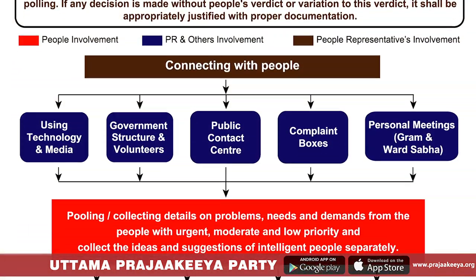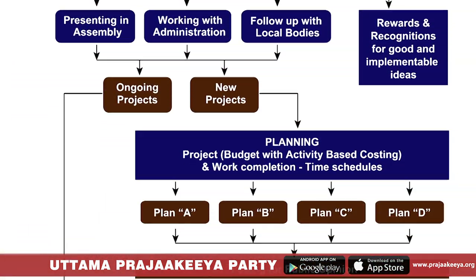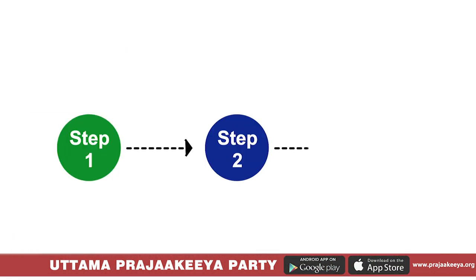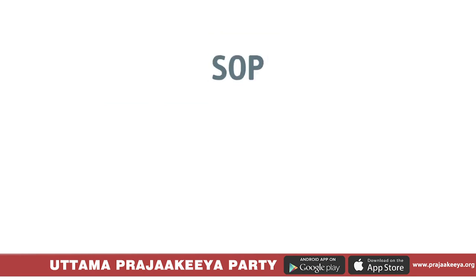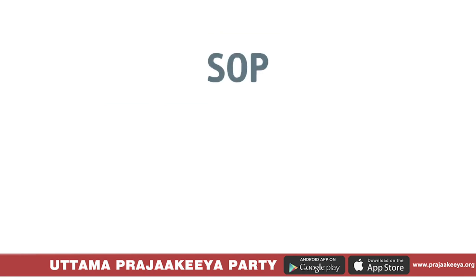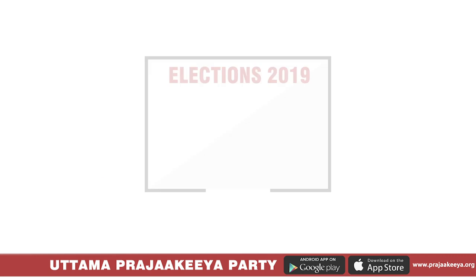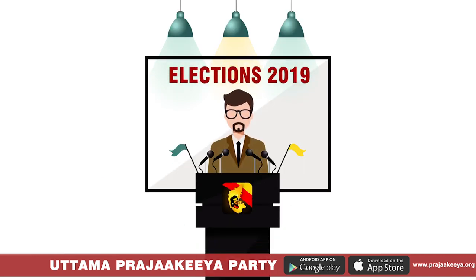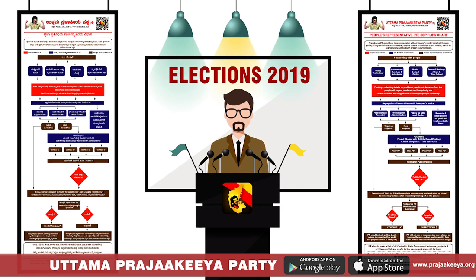Uttama Prajakya Party have come up with SOP — that is Standard Operating Procedure — for their candidates, so you can easily take part in the decision-making process of your government. This chart reveals in a simple way the entire functional steps of our Prajakya Party's people representative. Any suitable candidate willing to contest election has to compulsorily follow this methodology or steps of SOP.